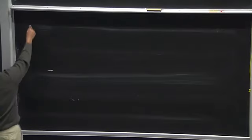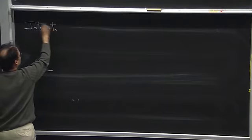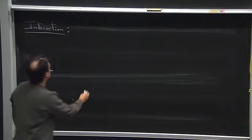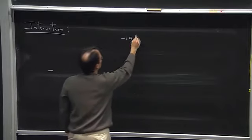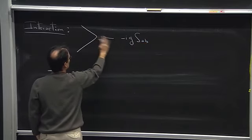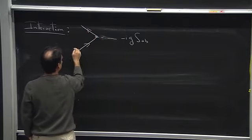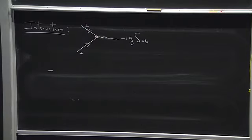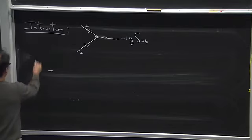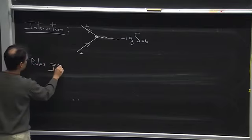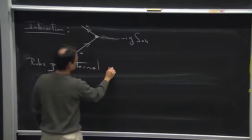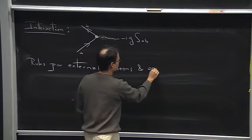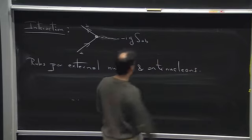The interaction was simply minus i·g times delta_ab, and we had the nucleon and an anti-nucleon — it doesn't really matter here because this is symmetric in a and b. We said that we were missing one piece to complete the Feynman diagrams and actually start doing calculations — the rules for external nucleons and anti-nucleons.